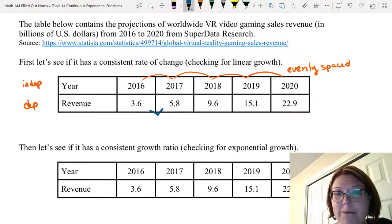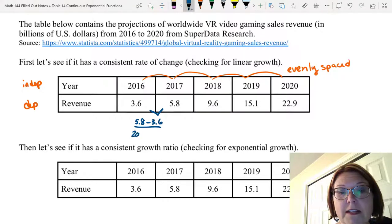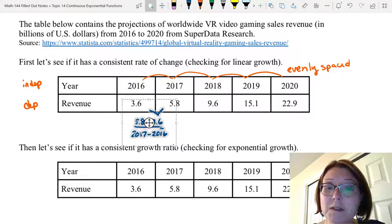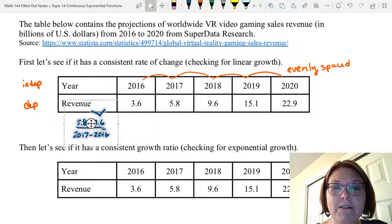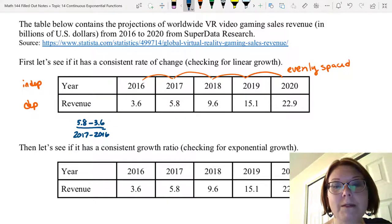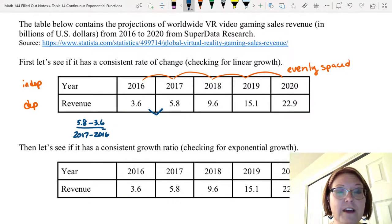Remember the numerator is the dependent variable and the denominator is the independent variable when we find rates of change. I'm going to start with the first data pair. And if I was to calculate a rate of change for this, I would do the dependent difference on top. That would be 5.8 minus 3.6. And then the independent difference on the bottom, which would be 2017 minus 2016. And the denominator for every pair we do is going to be just one. So I'm going to simplify my calculation quite a bit and simply look at the difference of the numerators, the dependent variables. Our first difference is 5.8 minus 3.6, which is 2.2.